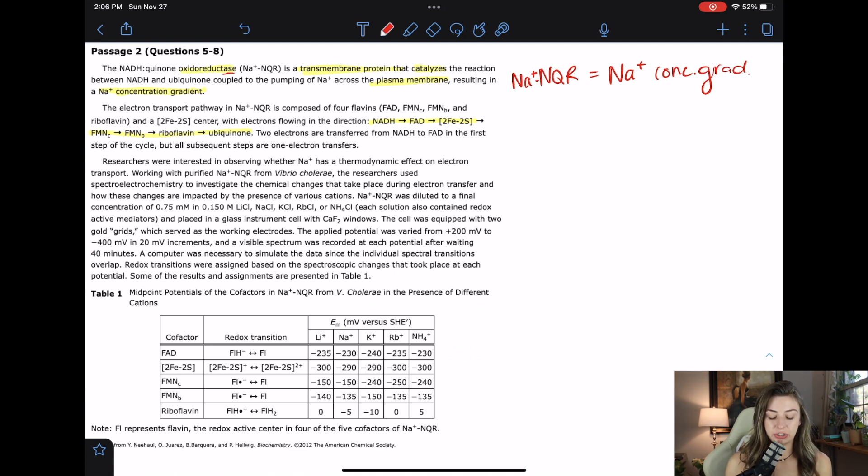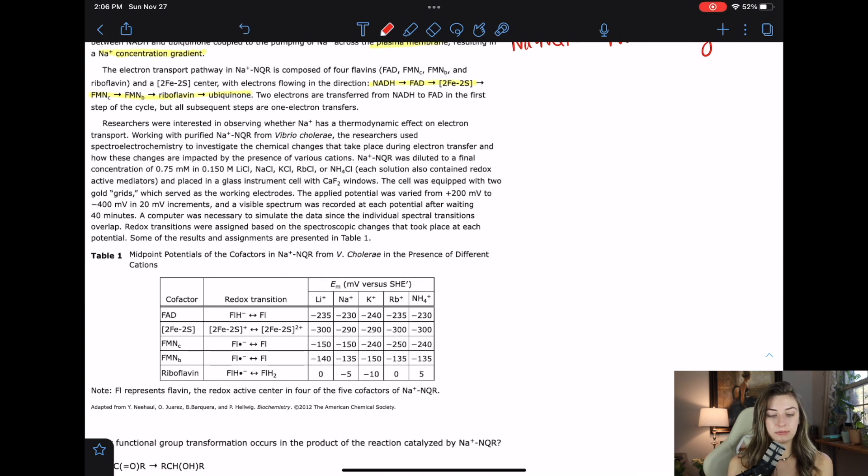Two electrons are transferred from NADH to FAD in the first step of the cycle, but all subsequent steps are one electron transfers. So definitely keeping that in my head. Researchers were interested in observing whether sodium has a thermodynamic effect on electron transport. Working with purified sodium NQR from Vibrio cholerae, the researchers used spectro electrochemistry to investigate the chemical changes that take place during electron transfer and how these changes are impacted by the presence of various cations.